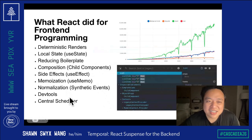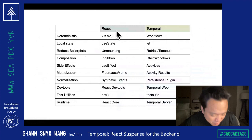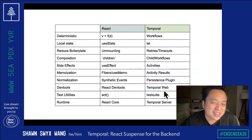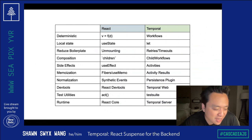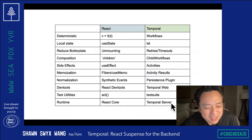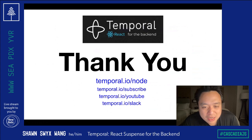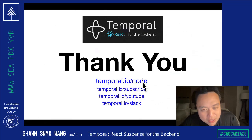There's a lot more I could not go into — feel free to hit me up. There's just way too much for a lightning talk. I just want to show you the amount of parallels, and these are all convergent evolution. Our founders did not know anything about React, but me as a React developer coming in, I was like, oh my God, there are so many parallels, because we're trying to solve similar problems on the back end. If you're interested, check out temporal.io/node — that's the URL for trying out the hello world. Thank you.